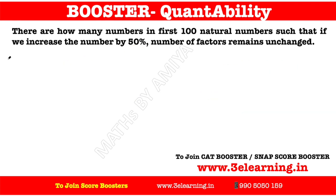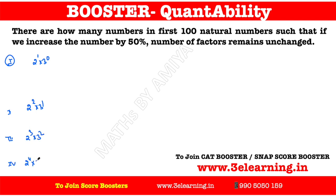Now we have case 1: when we have 2^1 and 3^0. Case 2: when we have 2^2 and 3^1, which gives 12. Case 3: we have 2^3 and 3^2, which gives 72. Case 4: when we have 2^4 and 3^3 — not possible, because the range is 100.